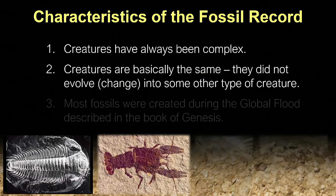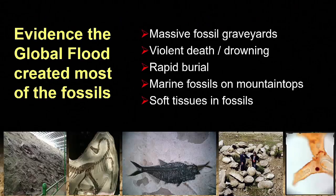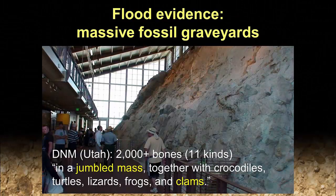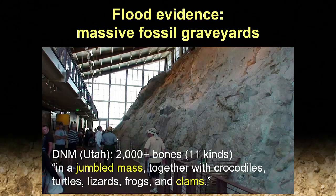Let's move on to number three: most fossils were created by the global flood. Do we have any evidence for that? We do — lots of it. Usually when you find fossils, they're in these massive graveyards. We have all these animals that were busted up and then washed together, like this pile in Utah — over 2,000 bones with 11 different kinds of dinosaurs in a jumbled mess, together with crocodiles, turtles, lizards, frogs, and clams.